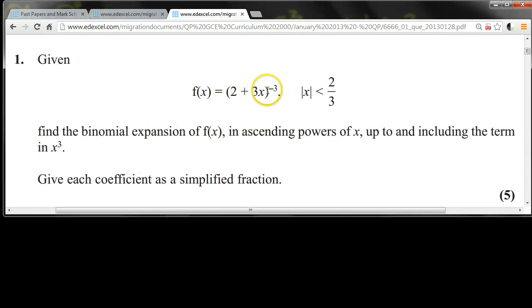Given f(x) equals (2 + 3x) to the power of minus 3, for |x| less than 2/3, find the binomial expansion of f(x) in ascending powers of x, up to and including the term in x³. Give each coefficient as a simplified fraction.